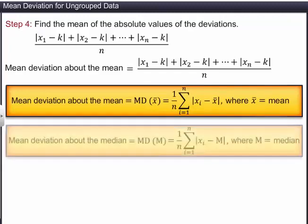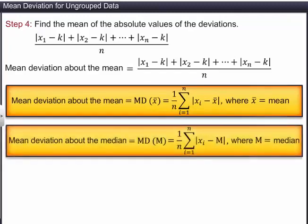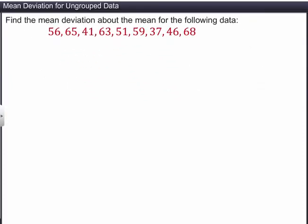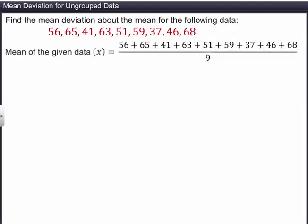This can also be written in the summation form as shown. Similarly, the mean deviation about the median is shown. Let's look at an example where we need to find the mean deviation of the given data. The mean of the given data, x-bar, is equal to the sum of the observations divided by the number of observations. This is equal to 54.